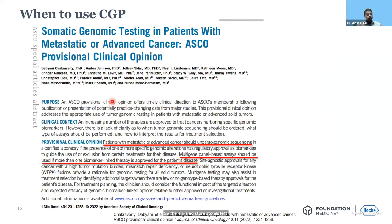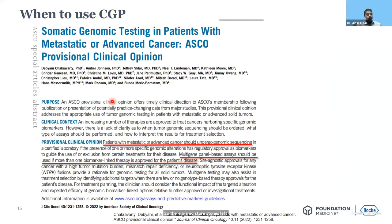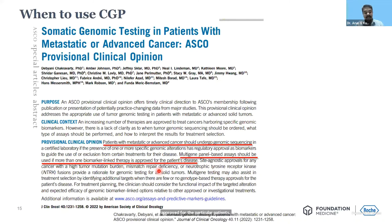When should we apply comprehensive genomic profiling? A recent ASCO update very categorically states that any patient with metastatic or advanced cancer should undergo genomic sequencing, and a multi-gene panel-based assay — which is typically comprehensive genomic profiling — should be used if more than one biomarker-linked therapy is approved for that patient. With the increasing number of pan-tumor markers, this encompasses almost all major tumors we come across regularly.